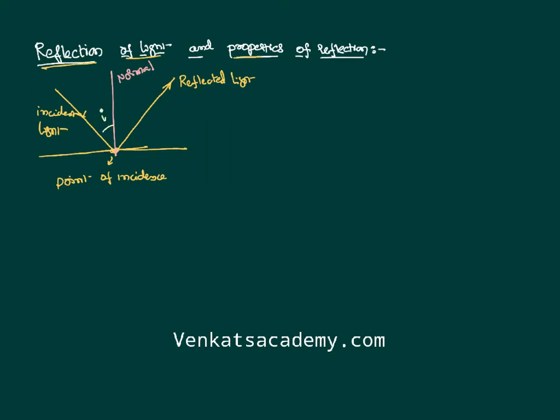The angle between the incident ray and the normal is called the angle of incidence. The angle between the normal and the reflected light ray is called the angle of reflection. These lead us to the laws of reflection.